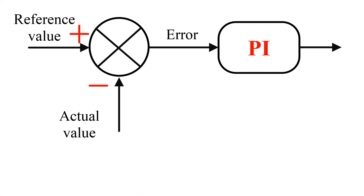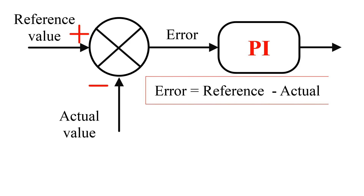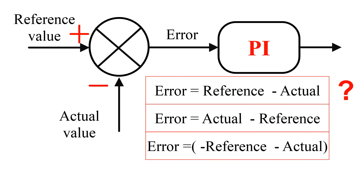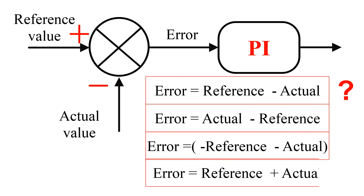In order to implement the PI controller for any application, first we need to find the error between the reference value and the actual value. Generally we write error as reference value minus actual value. But the important question here is: will this equation hold true all the time? Or can we have a situation where the error is written as actual value minus reference value, or minus reference minus actual value, or reference value plus actual value? So in today's video, I'm going to explain the fundamental concept behind this.